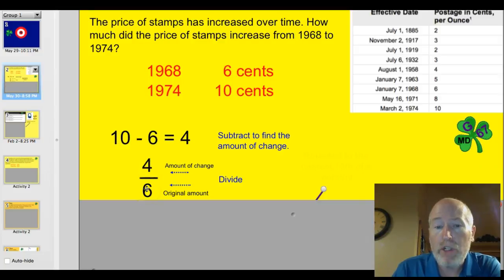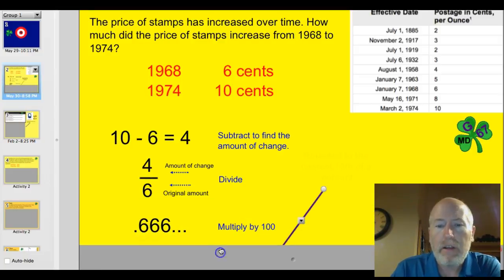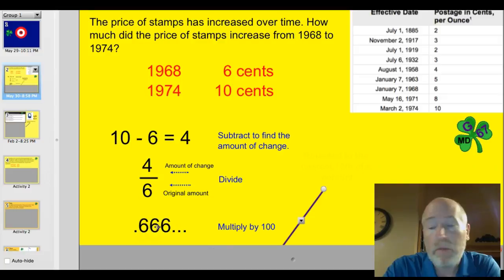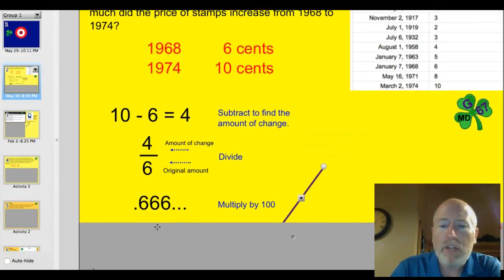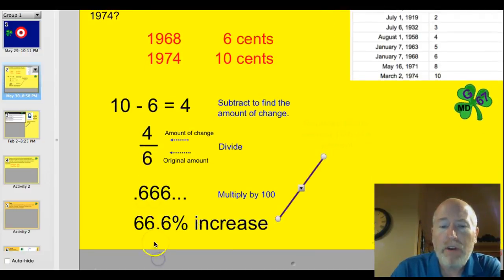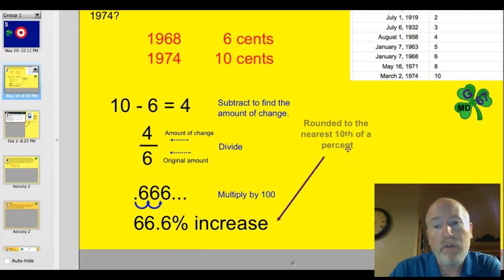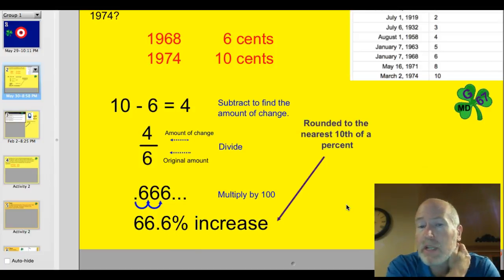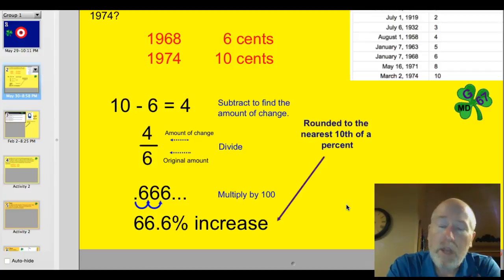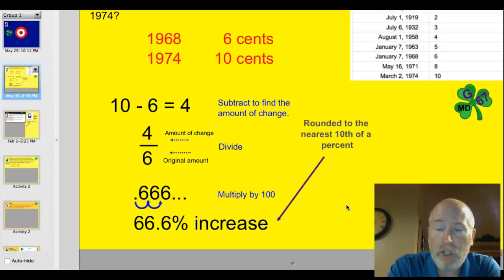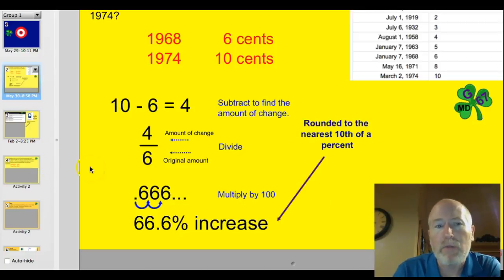Amount of change over the original amount: 4 over 6. Then, just like a fraction, you divide, and what you end up with on your calculator is 0.66 repeating. You take and multiply that number by 100 to make it into a percent, and you get 66.6% if you're rounding to the nearest tenth of a percent. We use these same steps each time we work to find the percent of change: subtract to find the amount of change, divide, then multiply by 100, and then typically we do some rounding too.